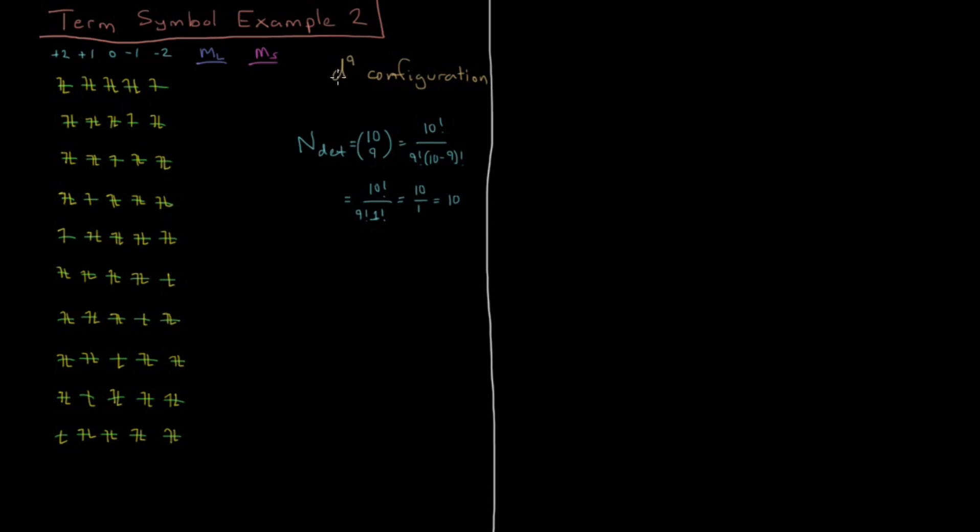Same for D0 and D10, D1 and D9, D2 and D8, D3 and D7, D4 and D6. Each of those pairs gets the same term symbols based on how the math works out.